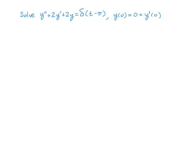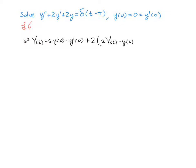The first step of this process is to take the Laplace transform. When we do that we're going to get s squared big Y of s minus s times little y of zero minus y prime of zero — that's from the y double prime — plus two times the Laplace transform of y prime, which is s big Y of s minus little y of zero, plus two times the Laplace transform of y, which is big Y of s, and now equal to the Laplace transform of the delta function, which is just e to the negative pi times s.